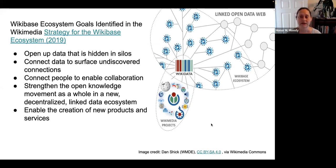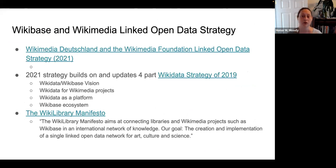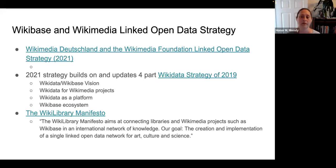The Wikibase ecosystem is geared in some ways toward GLAM professionals, who have been called out by the Wikimedia Foundation and Wikimedia Deutschland as natural partners and allies of the Wikimedia movement and the open knowledge movement. I'll leave you with links to the Wikibase and Wikimedia linked open data strategy: the most recent 2021 strategy builds on the four-part 2019 strategy. There's also the Wikilibrary Manifesto, written by Wikimedia Deutschland and the German National Library, signed by approximately 40 other libraries — mostly in Europe — and IFLA is a signatory as well.